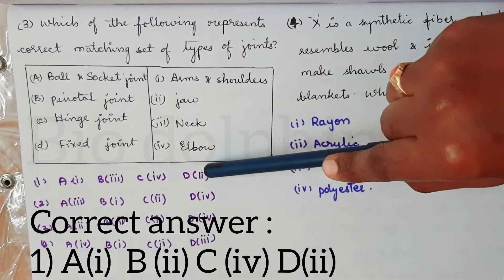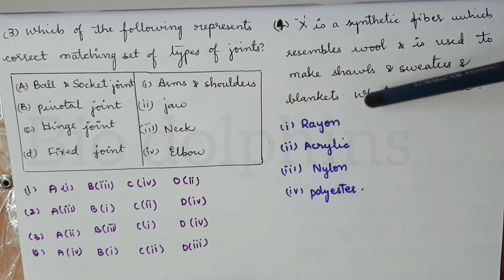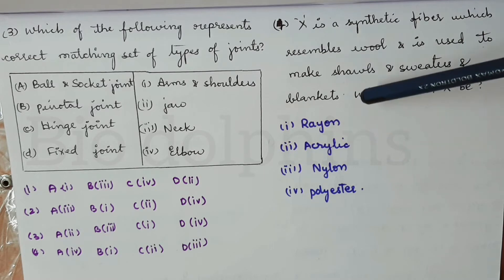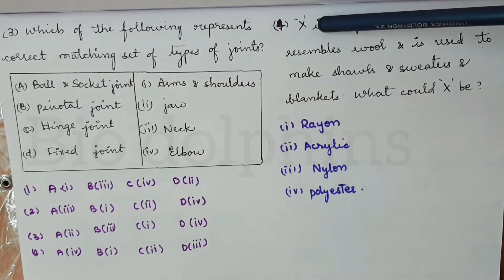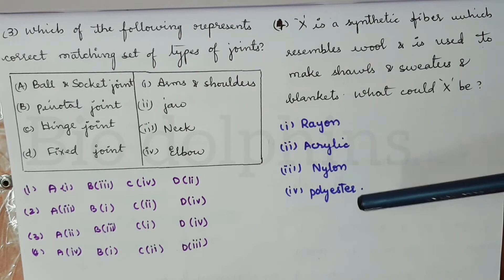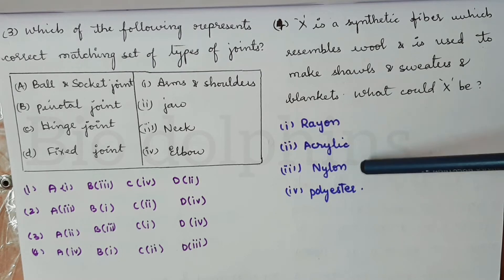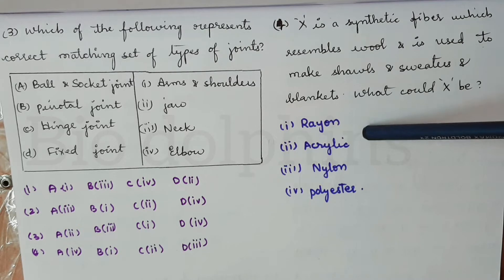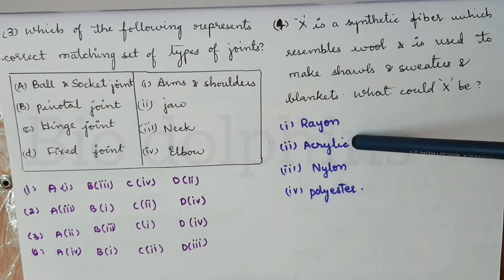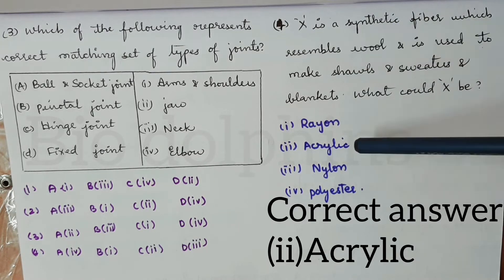Fourth question: X is a synthetic fiber which resembles wool and is used to make shawls, sweaters, and blankets. What could X be? Acrylic is known as artificial wool, and it is used for shawls, sweaters, and blankets. Rayon is artificial silk made from cellulose. So the correct answer is acrylic, option 2.